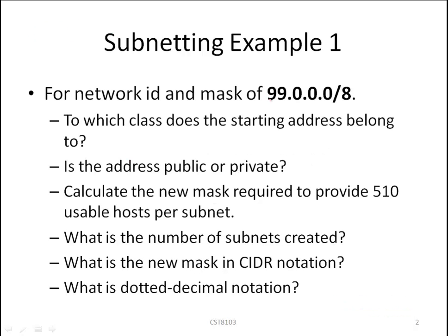In this example we will be subnetting address 99.0.0.0 slash 8 and our subnetting criteria is that we want to subnet in order to provide 510 usable hosts per subnet. Other questions we will be answering in this example is to which class does the starting address belong to? Is this a public or private address?